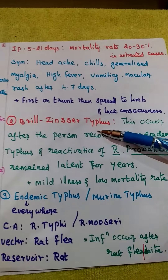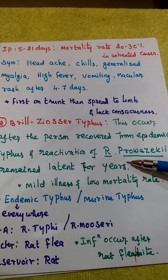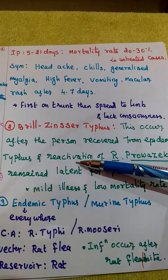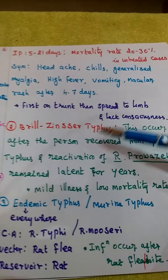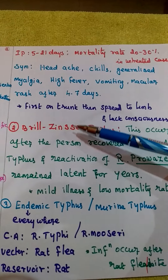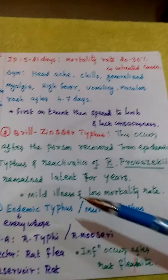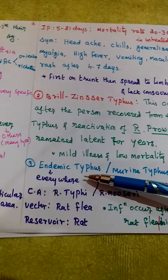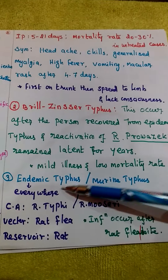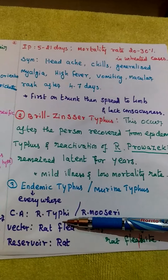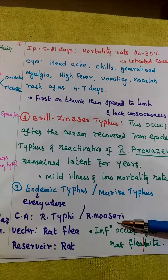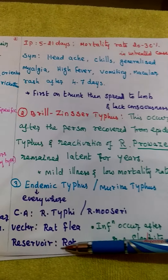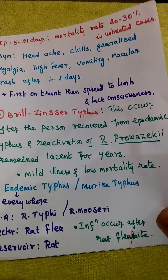The second type is Brill-Zinsser typhus. A person first affected by Rickettsia prowazekii takes treatment, but later the disease reactivates — for example, a patient affected at age 20 may get Brill-Zinsser typhus at age 60. Comparing to epidemic typhus, it is a milder illness with a lower mortality rate. The third is endemic typhus, also called murine typhus. The causing agent is Rickettsia typhi (Rickettsia mooseri), transmitted by rat fleas, with rats as the reservoir.